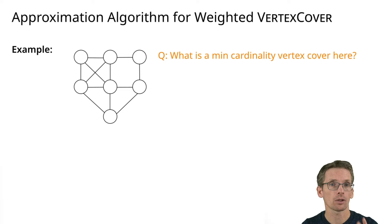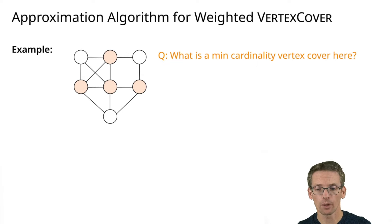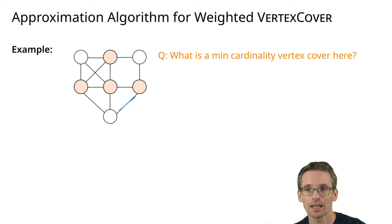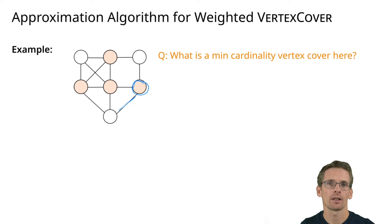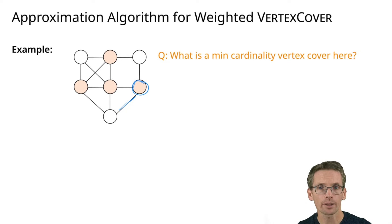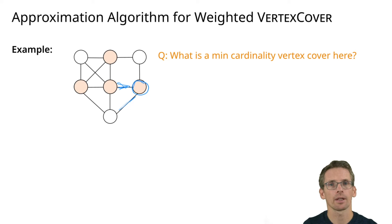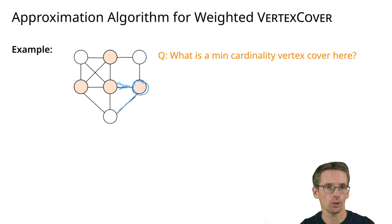In this example we need four vertices. No matter which edge you look at — for this edge we have an incident vertex selected, and for this edge both endpoints were selected, but that's also not a problem.